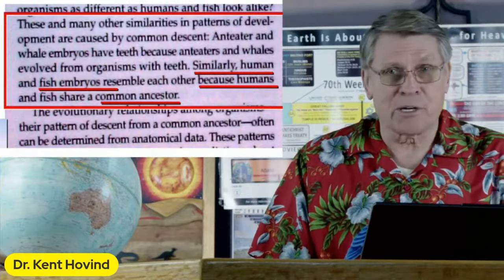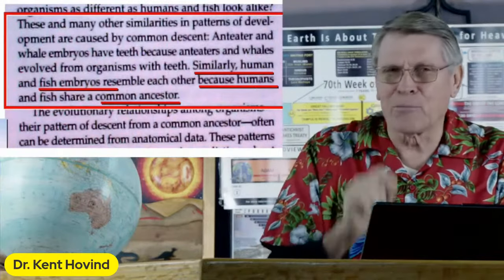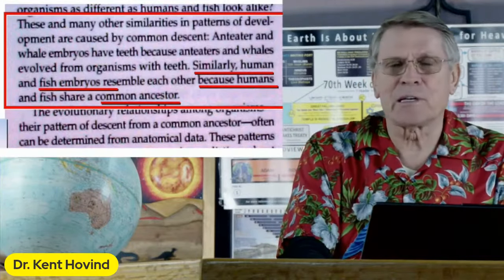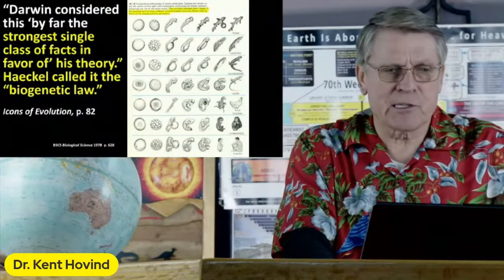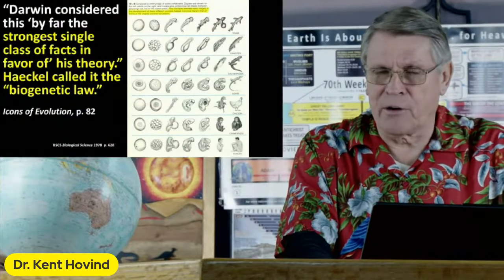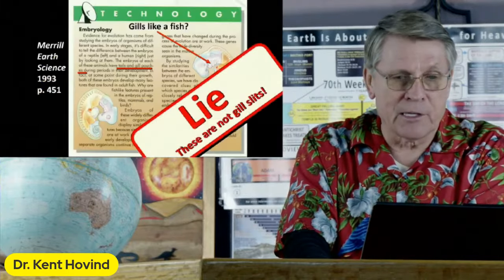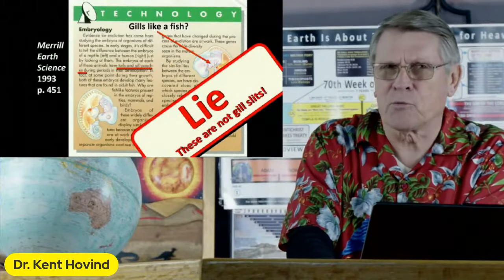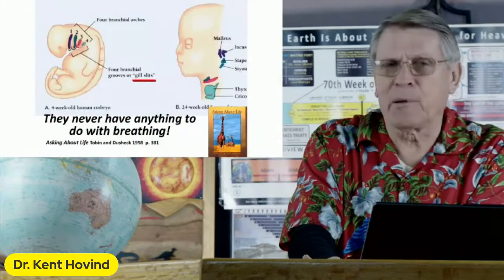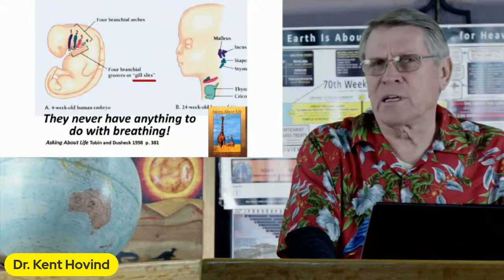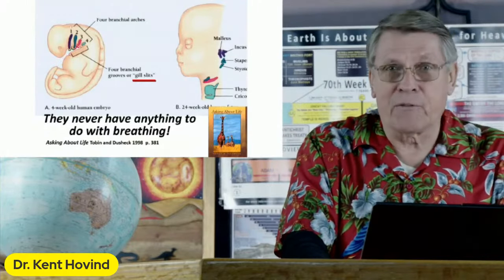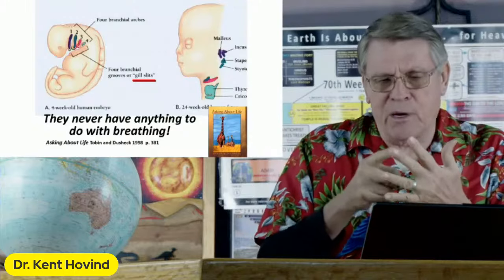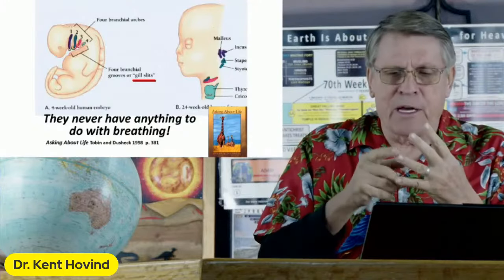The DNA code found in a little embryo is more complex than the computer system of New York City. Darwin called embryology by far the strongest single class of facts in favor of his theory, and Haeckel called it the biogenetic law. This textbook says embryos have tails and gill pouches — but those are not even gill slits. Why use the word 'gill' when they develop into bones in the ear and glands in the throat? Humans never have gills.